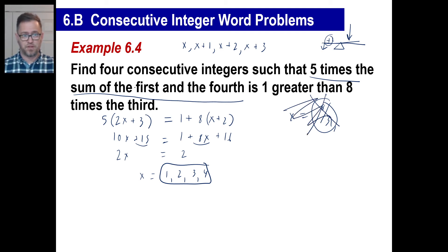5 times the sum of the first and the fourth. Well, what is 5 times the sum of the first and the fourth? 1 plus 4 is 5. 5 times that's 25. Is this 1 greater than 8 times the third? Well, there's the third. 8 times that is 24. Is that 1 greater than that? Yep, it sure is. That proves that we're right.